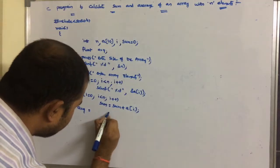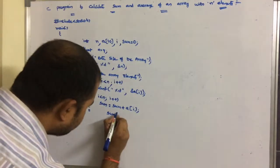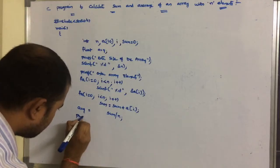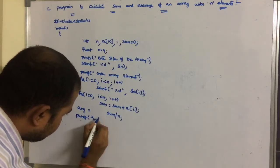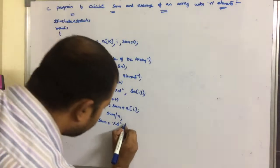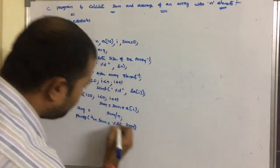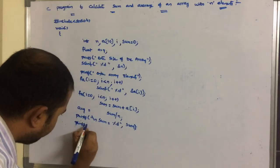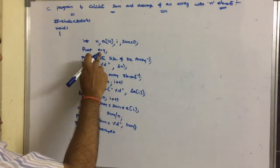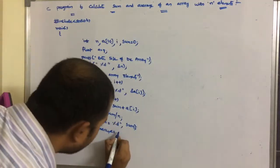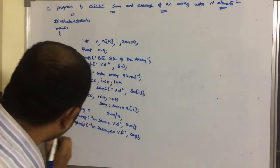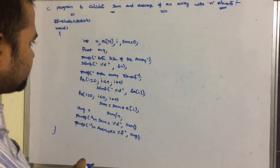After the loop, we calculate the average: abc = sum / n, where the formula for average is sum divided by number of elements. Then we display the results: printf("\nSum = %d", sum) to print the integer sum, and printf("\nAverage = %f", abc) to print the float average. Finally, we close the main function and see how the program executes.